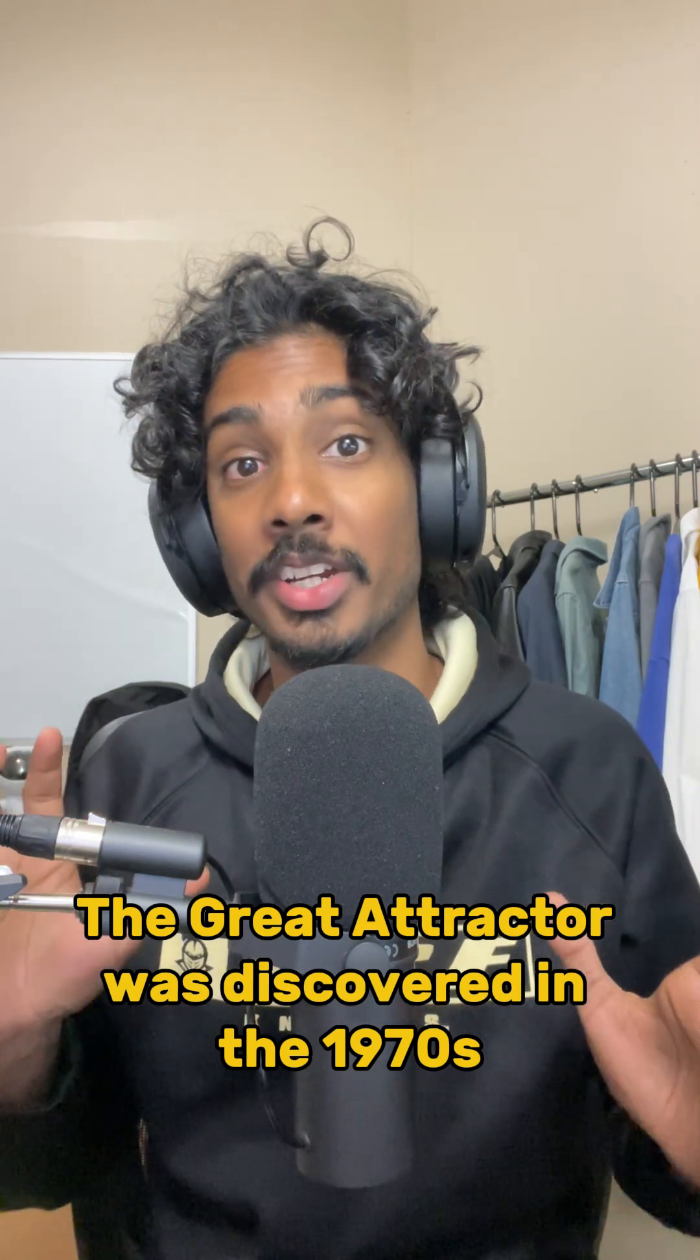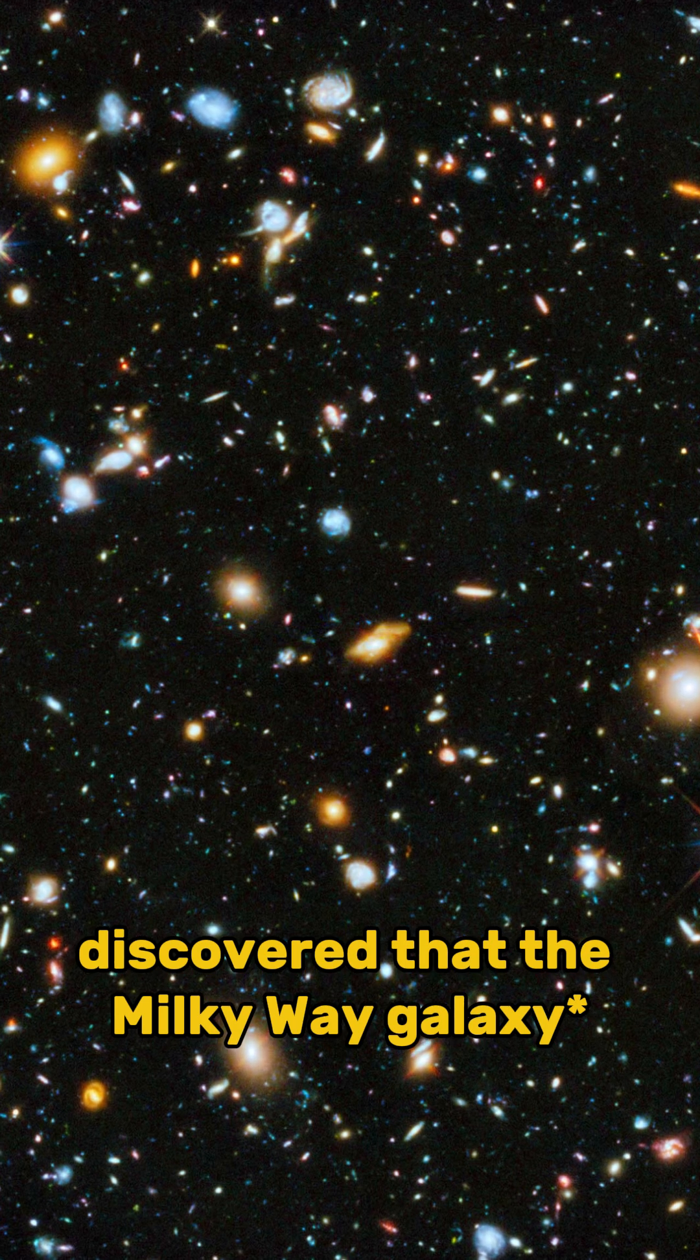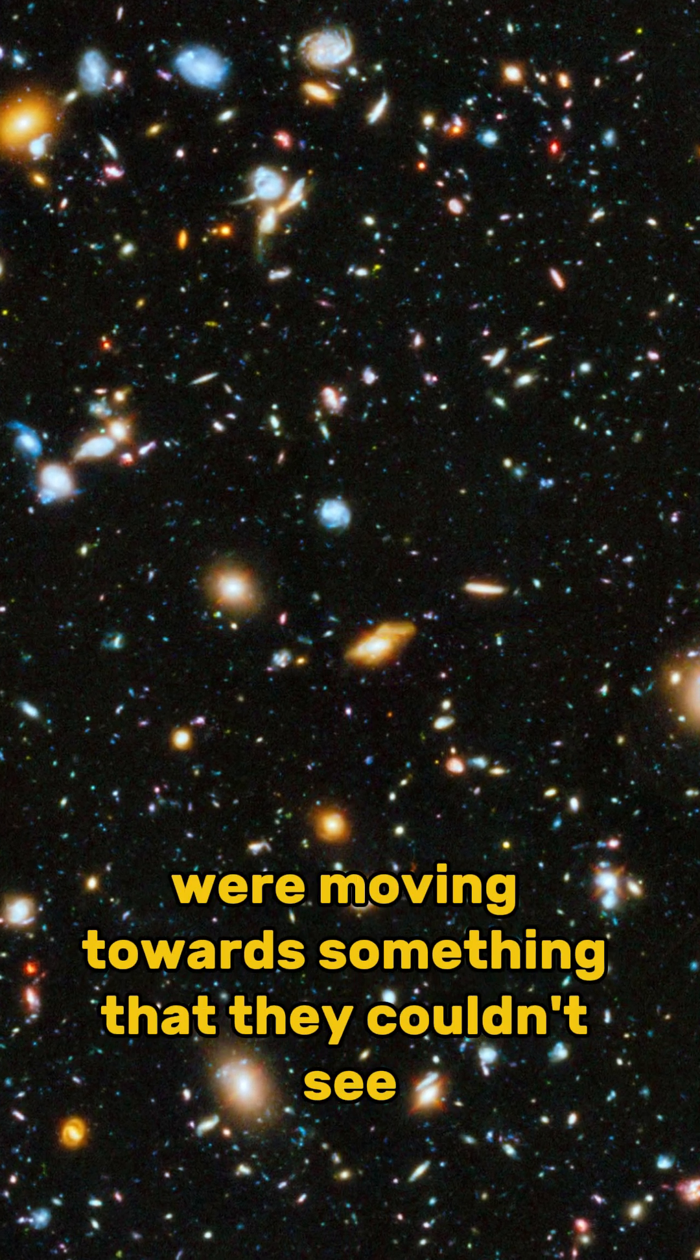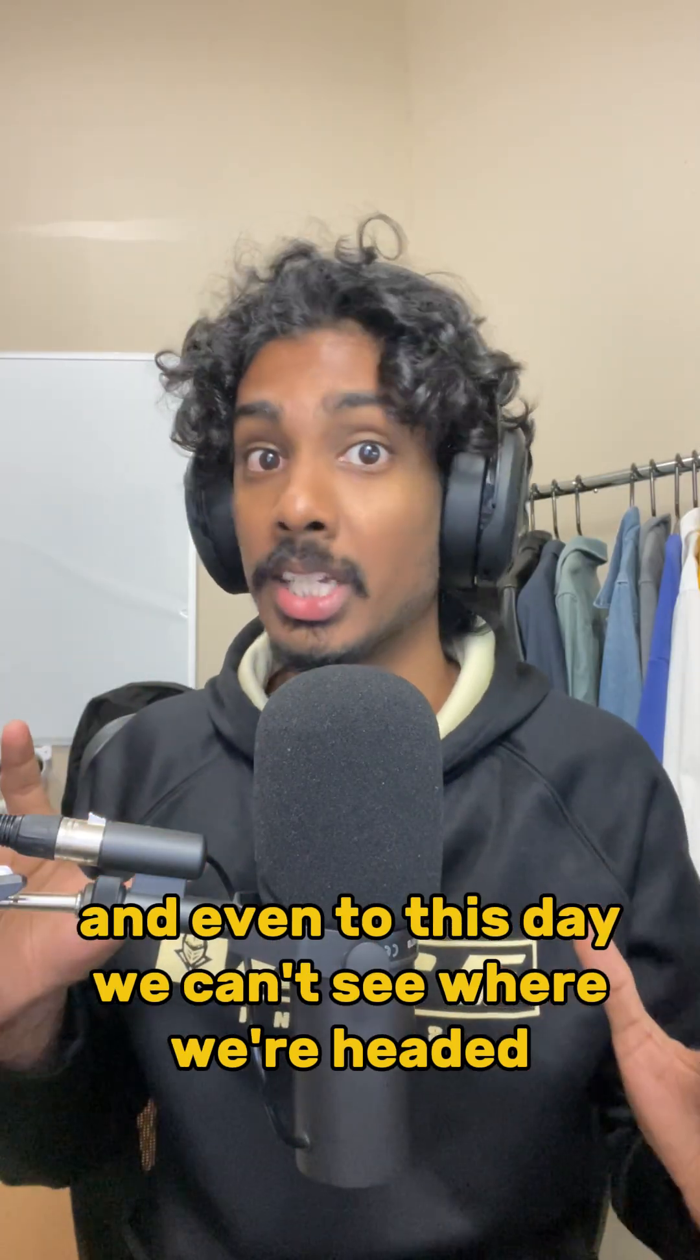The Great Attractor was discovered in the 1970s when astronomers discovered that the Milky Way galaxy and other nearby galaxies were moving towards something that they couldn't see. And even to this day, we can't see where we're headed.